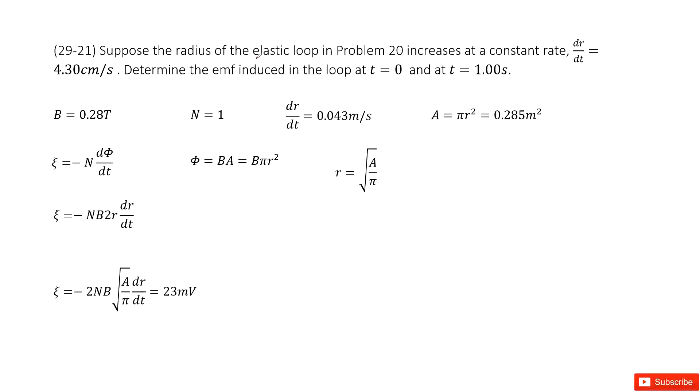So there we have a loop, an elastic loop. The radius can change with time at a constant rate, 4.3 cm per second. So we write it there. And then it tells us this loop is exactly the same as in problem 20.